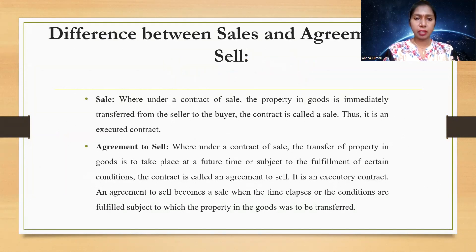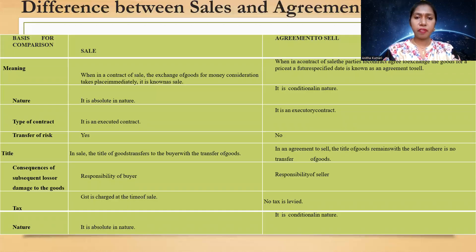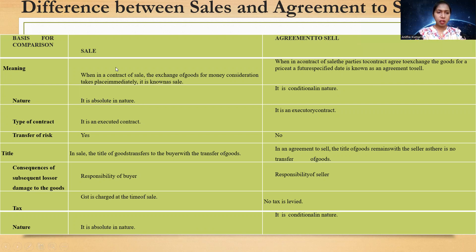Difference between sales and agreement to sales: Under sales, when a contract of sale is formed, the property in goods is immediately transferred — the ownership transfers immediately to the buyer. Whereas under agreement to sales, the buyer contacts the seller, gives an advance, and books the goods, and in the future it will be sold. The meaning: in a contract of sale, the exchange of goods for money consideration takes place immediately, whereas in agreement to sale, it takes place in the future — it is a future-oriented contract.